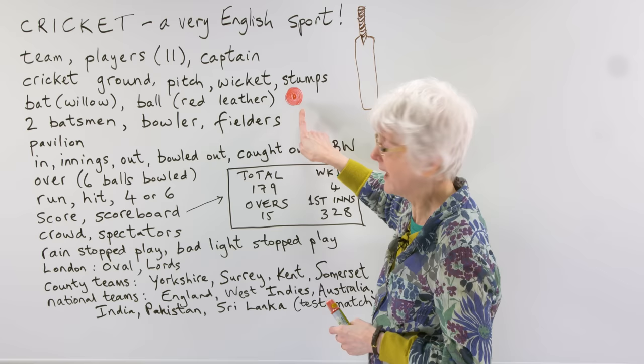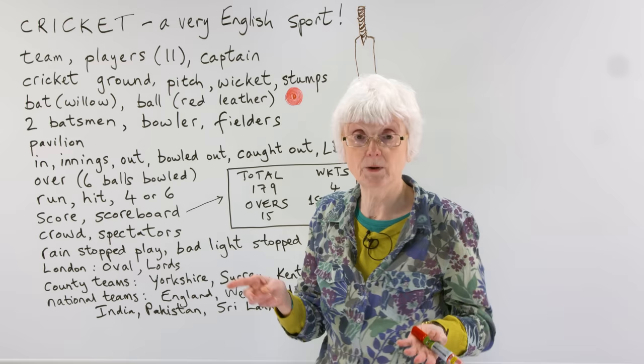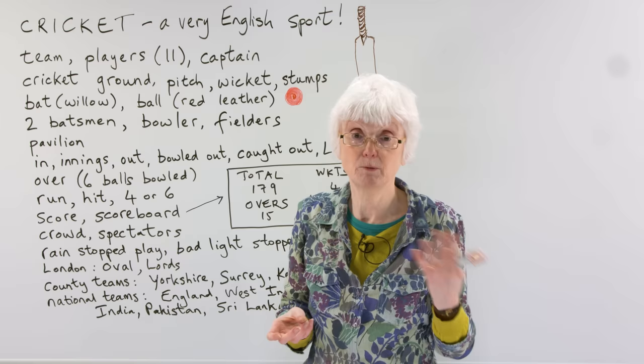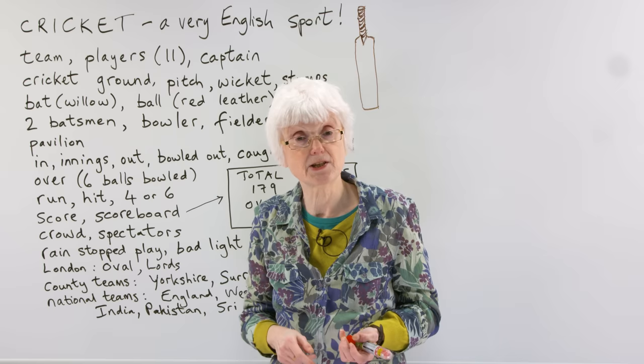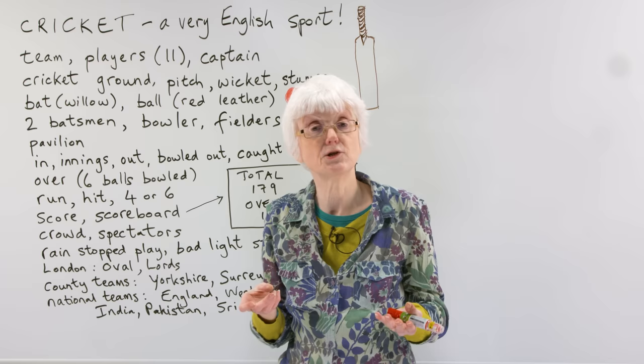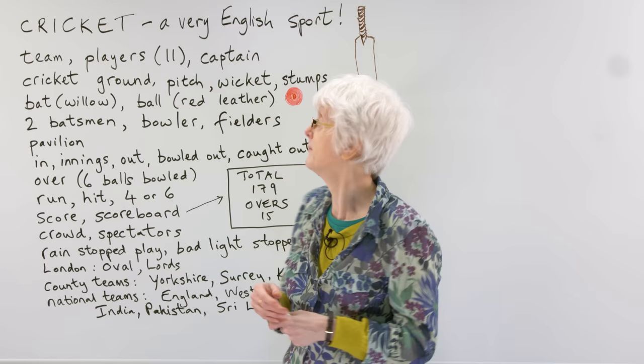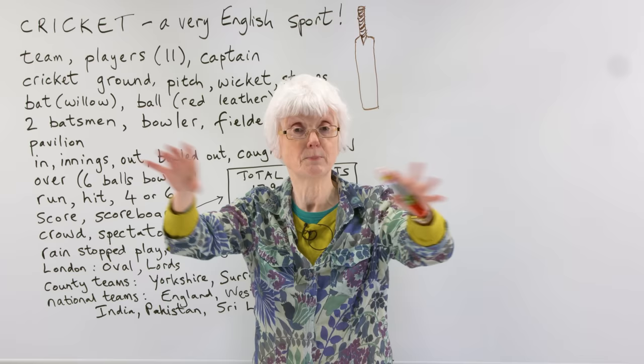Basically, like with a lot of sports, you have a team of players. The members of the cricket team are called players, and each team has eleven players. There's a captain who's the person in charge of the team. The place where the game is played is called a cricket ground - a big open space with grass and room for people to sit and watch.